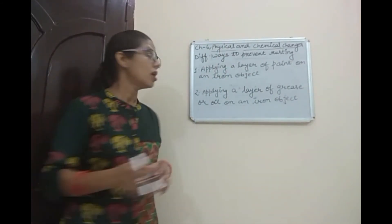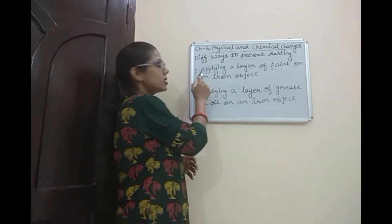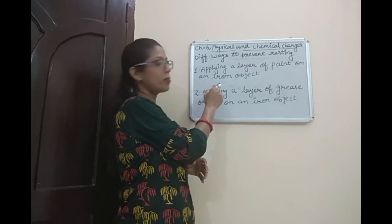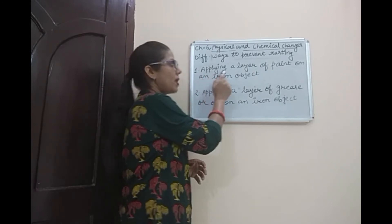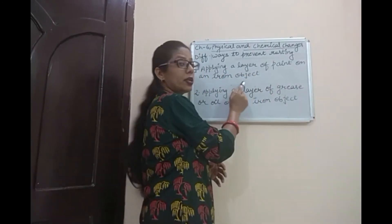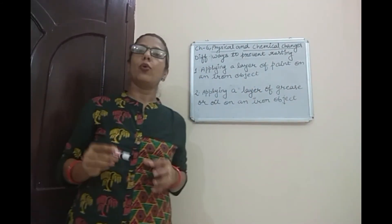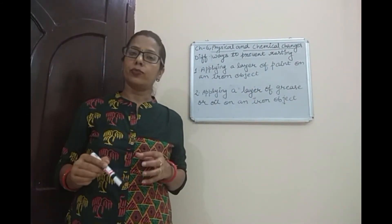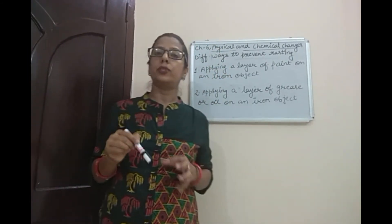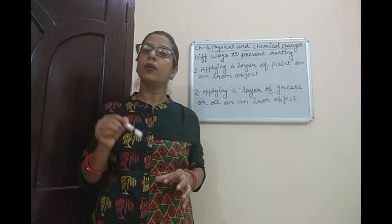There are different ways to prevent rusting. The first method is applying a layer of paint on an iron object. When we apply a layer of paint, this layer does not allow the iron object to come in contact with air and water.